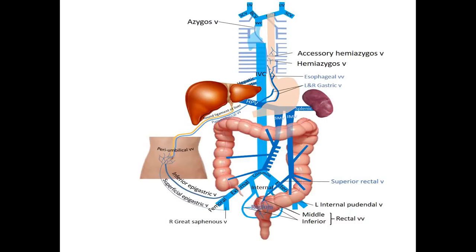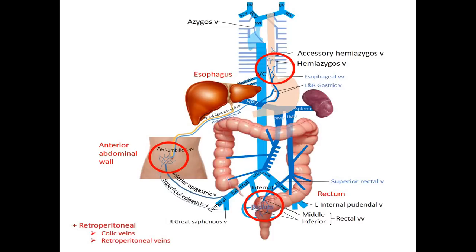Have you spotted them? Here they are: the esophagus, the anterior abdominal wall, and the rectum. There is an additional anastomosis between the retroperitoneal veins and the colic veins, but these are less clinically important so we do not examine them.